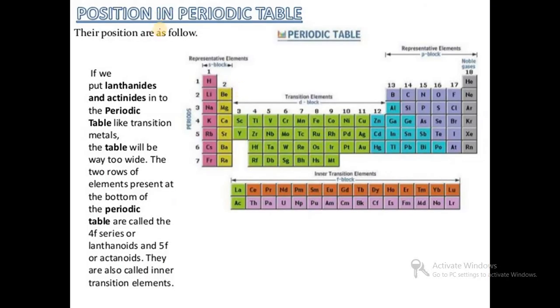About the position of actinide series in the periodic table, their positions are as follows: inner transition elements or f-block elements are presented at the bottom of the periodic table. The 4f series is the lanthanide series.